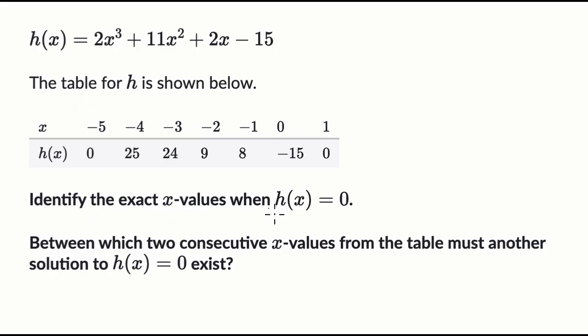Identify the exact x-values where h(x) = 0. Pause this video and have a go at that. When does h(x) equal zero? We can see it equals zero right here and here. The x-values are x = -5 and x = 1. Another way to say it: h(-5) = 0 and h(1) = 0.